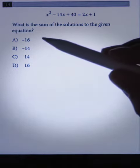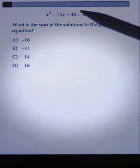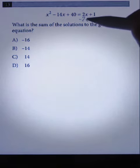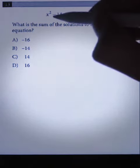What is the sum of the solutions to the given equation? The first thing I'm going to do is try to get all the terms on one side, so I'm going to subtract 2x and subtract 1